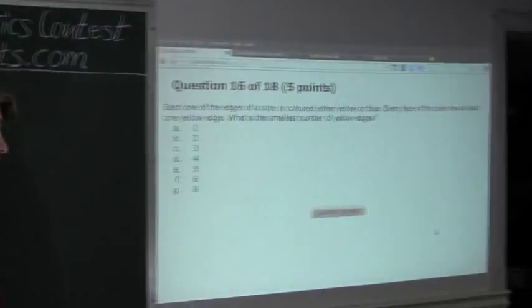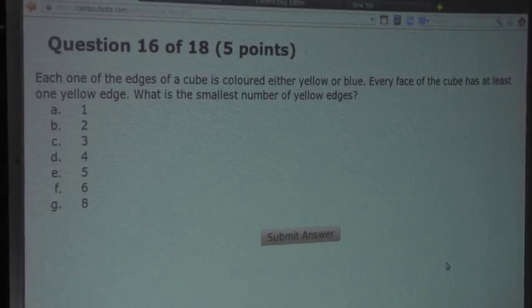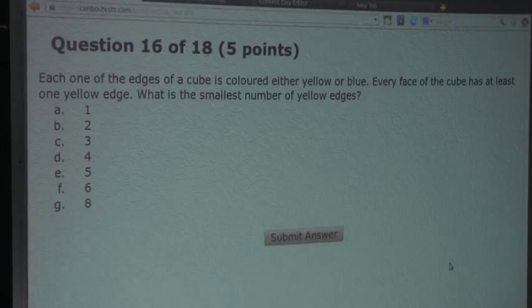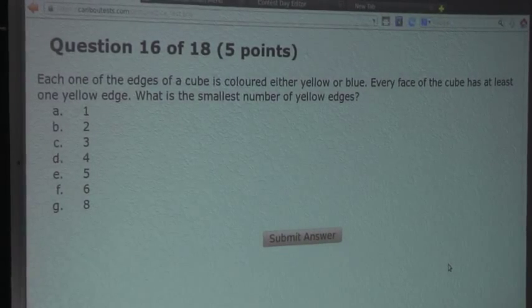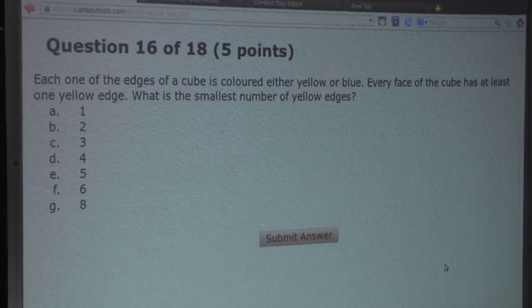So the question is, each one of the edges of a cube is colored either yellow or blue. Every face of the cube has at least one yellow edge. What is the smallest number of yellow edges?